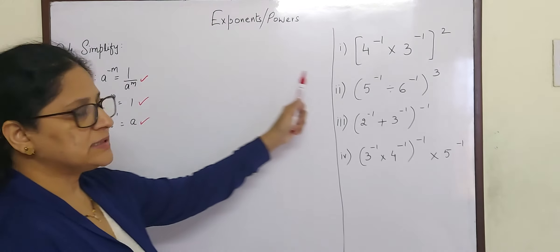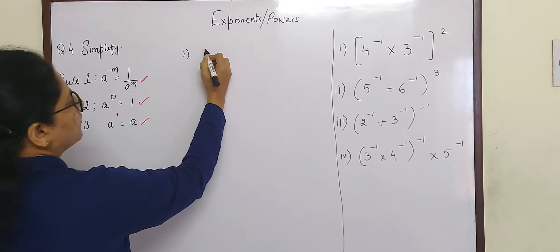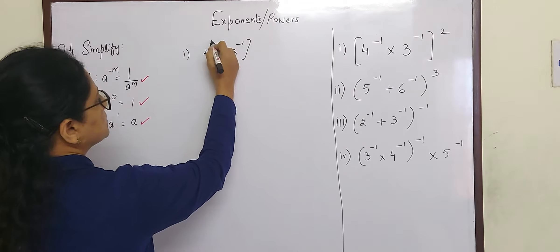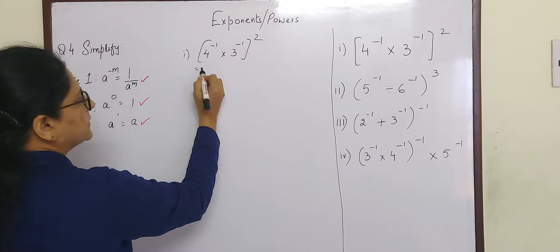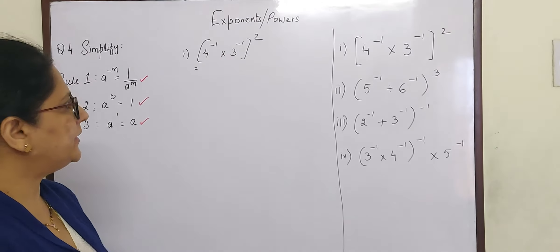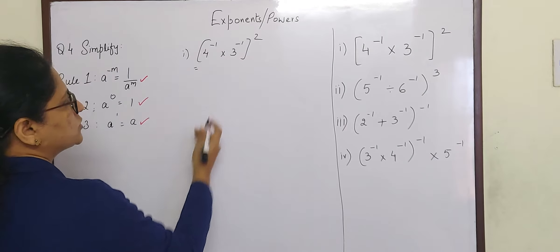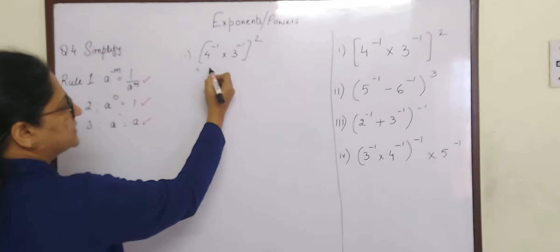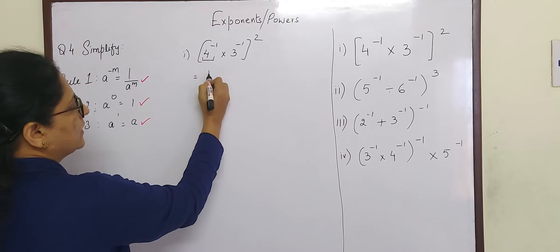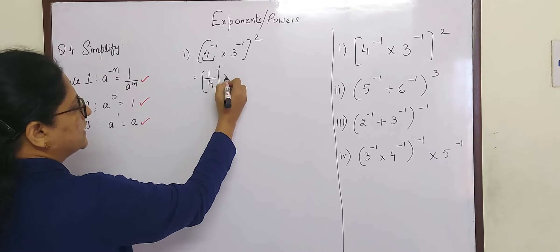We will be using these formulas or laws to do these sums. So the first problem is: 4 raised to minus 1 into 3 raised to minus 1, the whole square. As we have learnt in the previous video, how to change a negative exponent to positive — now 4 raised to minus 1, how will we convert this into a positive exponent? We will do the reciprocal.